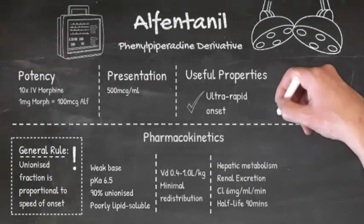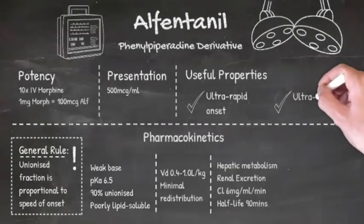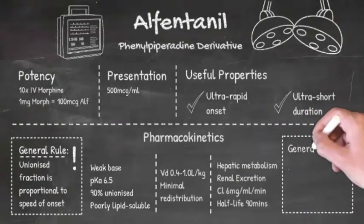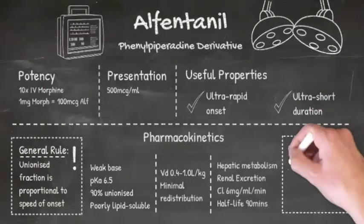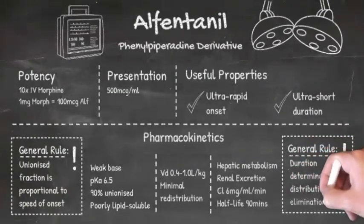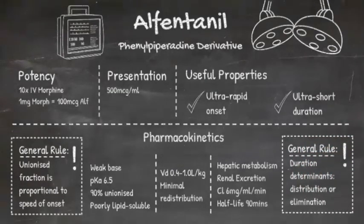Like fentanyl, alfentanyl is metabolised to inactive metabolites in the liver, which are then excreted renally. The duration of action of an opioid is largely dependent on either its redistribution or its elimination, and alfentanyl does not undergo a significant amount of redistribution, so its short duration of action is largely due to elimination in the form of hepatic metabolism.